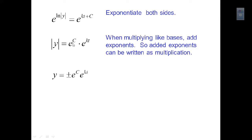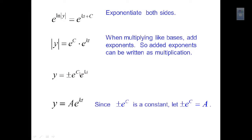We can think of e to the c as a constant that can be either plus or minus, and that takes care of the absolute value. We call that plus or minus e to the c some constant a. That gives us y equals a times e to the kt — this is the equation that the original differential equation comes from.